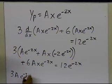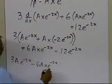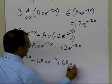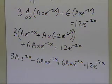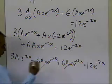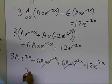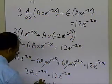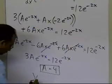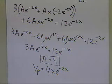Expanding, I get 3a·e^(−2x) − 6ax·e^(−2x) + 6ax·e^(−2x) = 12e^(−2x). The −6ax and +6ax terms cancel, leaving 3a·e^(−2x) = 12e^(−2x), which gives a = 4. So the particular part of the solution is 4x·e^(−2x).